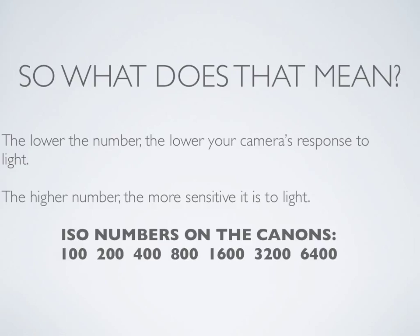So what does that truly mean? Lower number ISOs means the lower your camera's response to light. The higher number for your camera's ISO means the more sensitive your camera is to light. ISO numbers on your Canons are as follows — you'll see when you get the cameras out in a bit: 100, 200, 400, 800, 1600, 3200, and 6400.